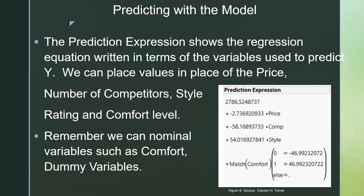When we go to predict with the model, we take our regression equation found under the prediction expression and plug in values for the x's. We start with our y-intercept of 2786.52, minus 2.7369 times a value for price, minus 58.1689 times the number of competing boot stores, plus 54.0169 times a style rating. Then we put in 1 times 46.99 if the boots were labeled comfortable, or 0 times negative 46.99, which cancels out for a non-comfortable score.